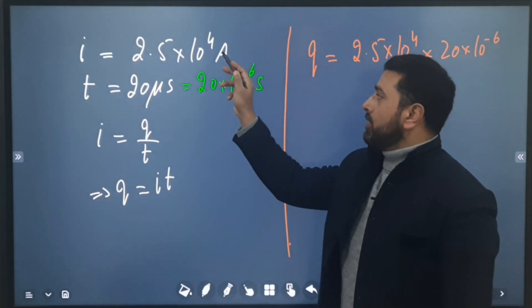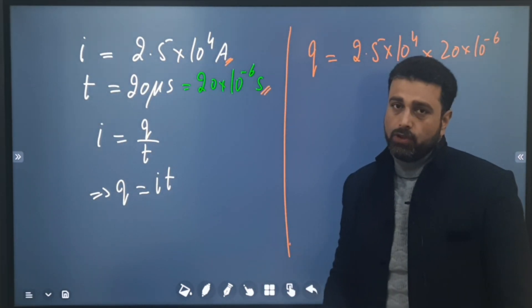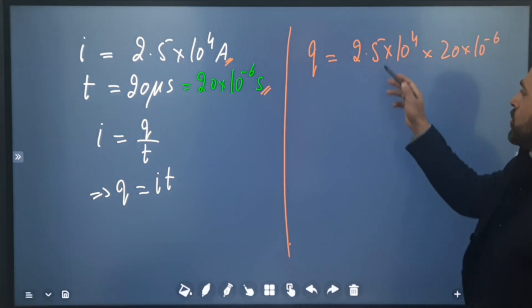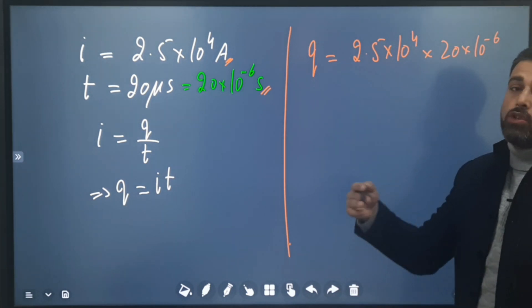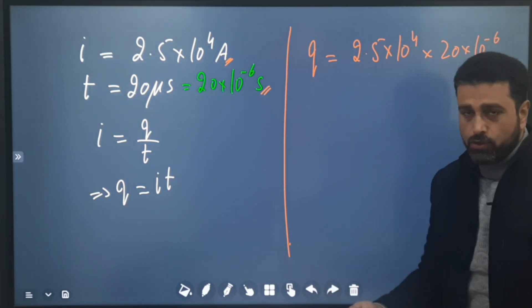Current is in SI system and time is also in SI system. So both of them are in SI system, so whatever the value of charge we will get will also be in SI system. That means Coulomb, its unit will be Coulomb.